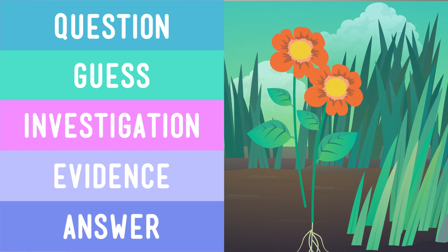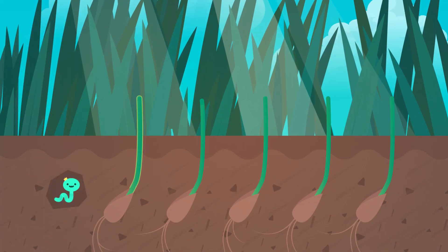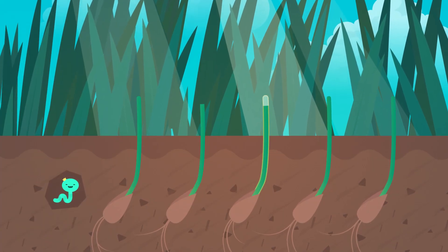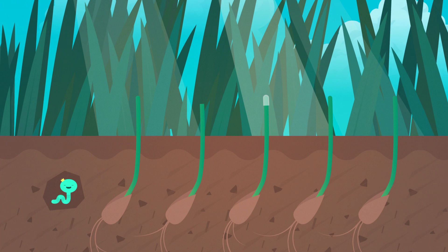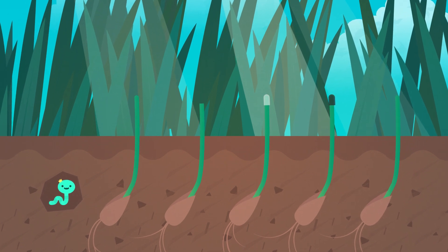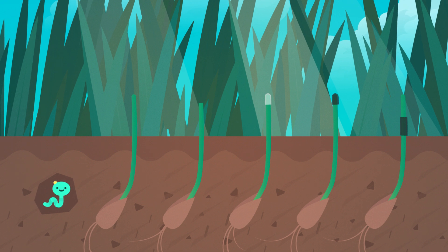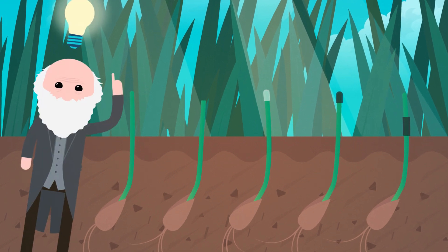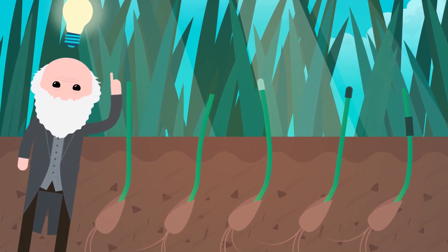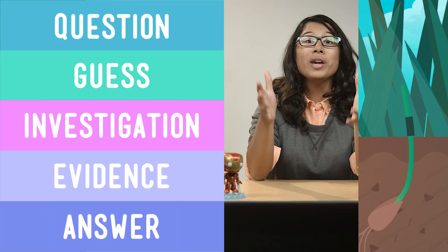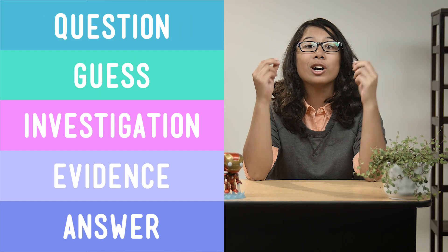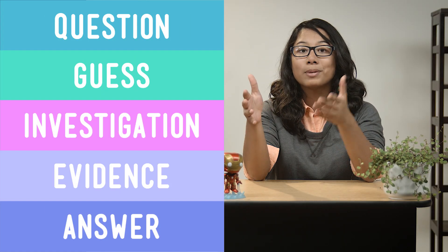Darwin guessed that there was something in the tip of a plant's stem that helped it sense where the light was coming from, so he designed an experiment to see if he was right. He grew plants, all the same type, and gave them all the same amount of light and water. He left one plant alone, cut the tip from another, covered the tip of one plant with a little glass cap, covered the tip of another with a dark cap, and covered the middle part of another plant with a dark piece of material. He observed that the plants with no tip and the one with the dark cap didn't grow toward the light. So he concluded that the evidence showed he was right about the plant's stem tips sensing the light.